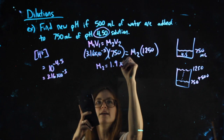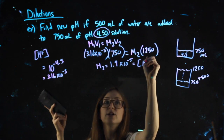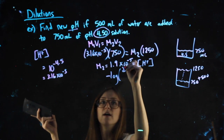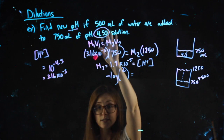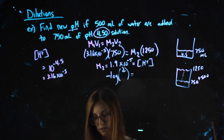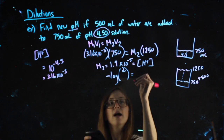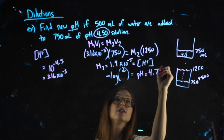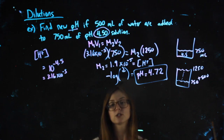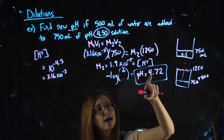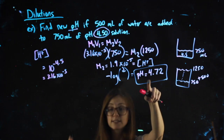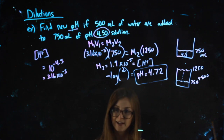I can solve for M2: (3.16 × 10⁻⁵) × 750 divided by 1250 gives me an M2 of 1.9 × 10⁻⁵, which is my H⁺ concentration. They want pH, which I can find by taking the negative log of the H⁺ concentration. Negative log of that answer gives me a pH of 4.72. We should ask: does this answer make sense? When I dilute something, its pH should get closer to 7. We started at 4.5 — have we gotten closer to 7? Yes. It's still an acid; you're not going to turn an acid into a base just by adding water. It's still acidic, but closer to neutral because we have more water diluting it.